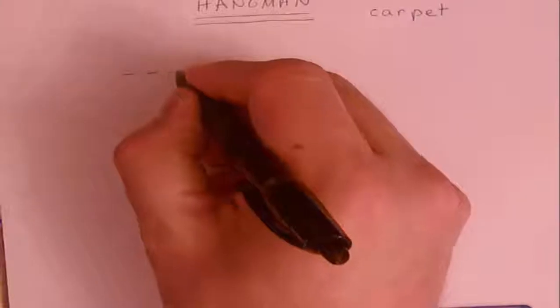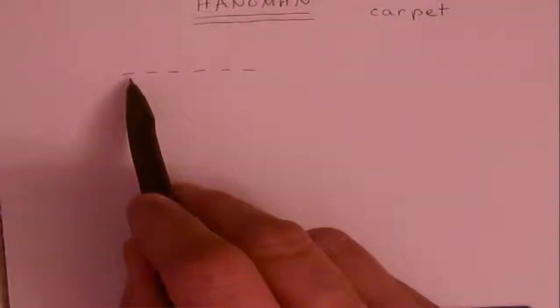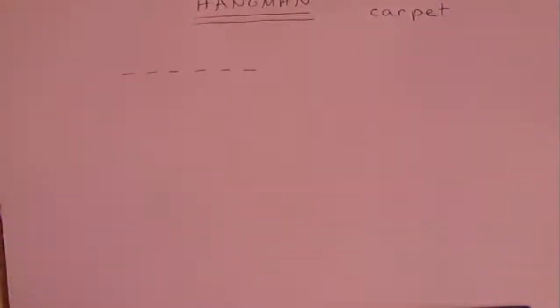To think about the logic of how it flows: initially you need to come up with a word. We don't normally tell you the word because the whole point is you've got to guess it, but to illustrate the point I'm going to tell you — I've thought of the word 'carpet'. The clue I give you is little dashes to fill in. Your only clue at the moment is it's six letters long.